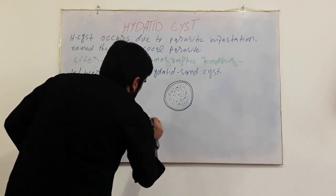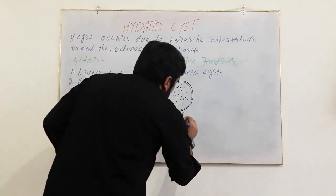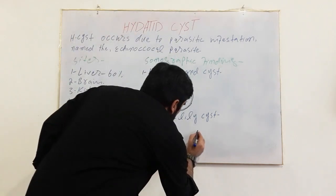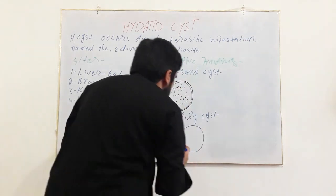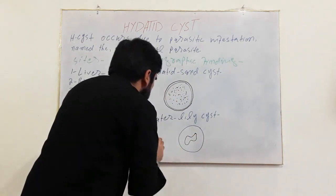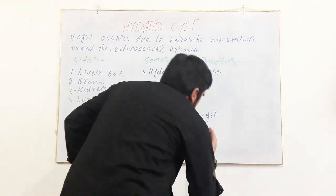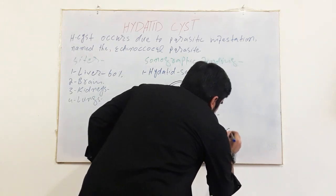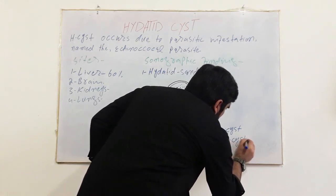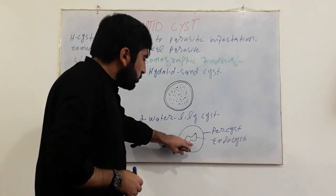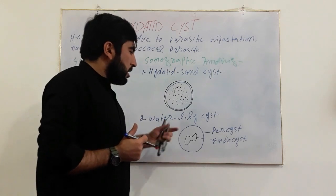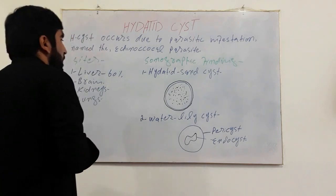The second type is the water lily cyst, or water lily appearance. In the water lily cyst, there will be an endocyst that is floating inside the pericyst, which gives an appearance like the water lily plant — a water plant. That is why it is termed the water lily cyst or water lily appearance.